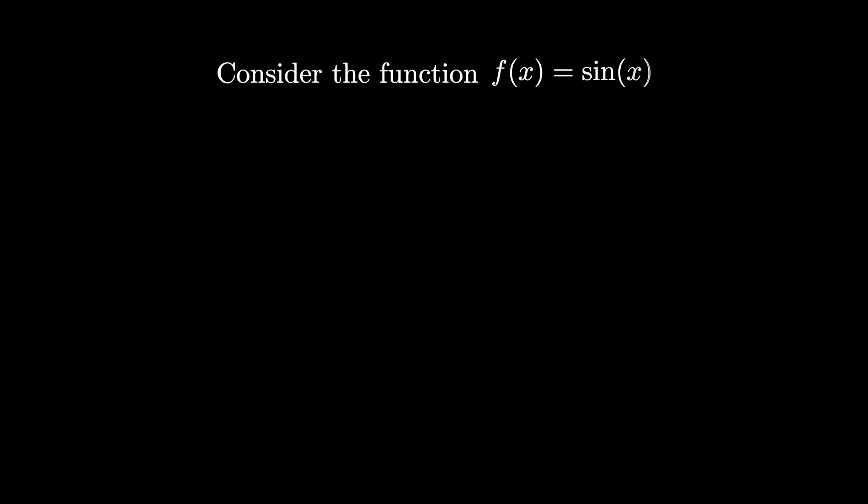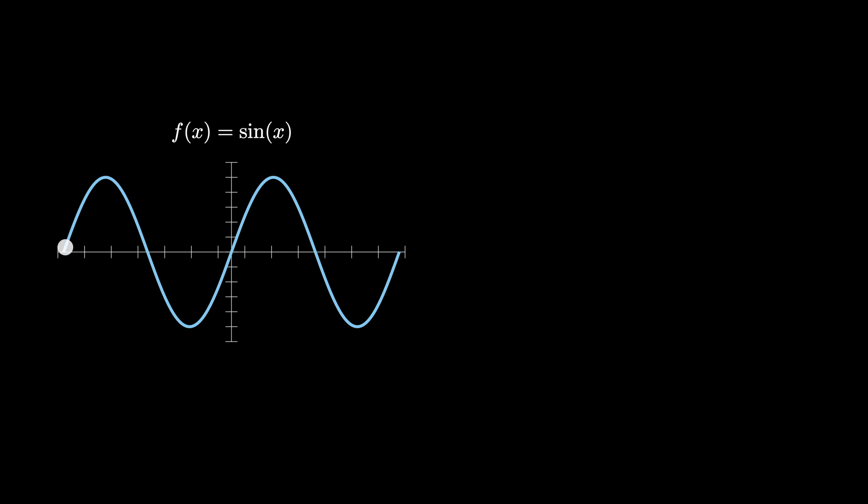Let's consider the function f of x equals sine of x. We can graph this function on the axis here. We can plot a single point on the curve and draw the tangent line to the curve at that point. Moreover, we can measure the slope of this tangent line. As we move the point along the curve, we see that the tangent line changes,